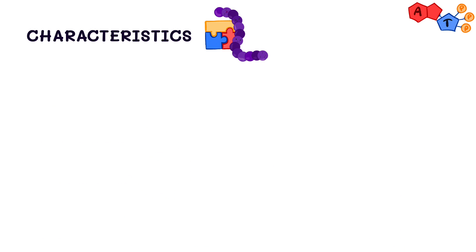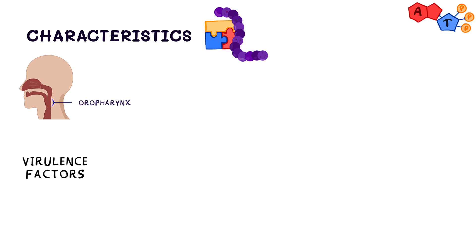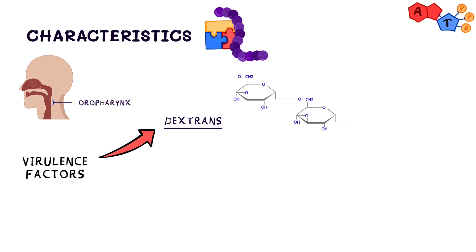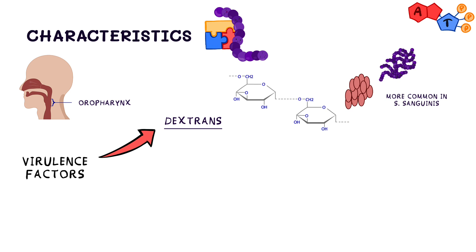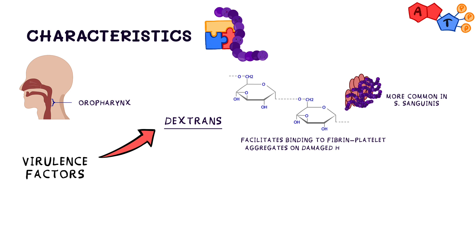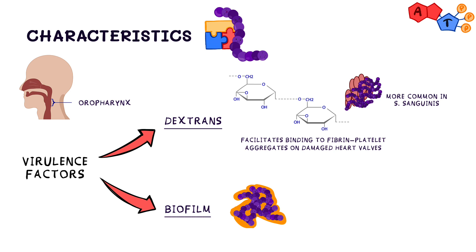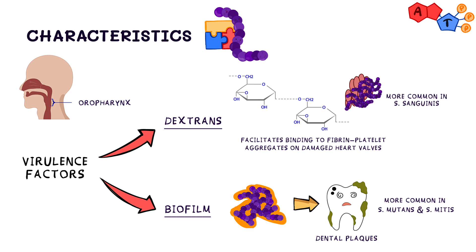The reservoir is in the oropharynx, and Streptococcus viridans has two important virulence factors. Dextran, which is more common in Streptococcus sanguinis, facilitates binding to fibrin-platelet aggregates on the damaged heart valve. It can also form a biofilm, leading to dental plaques — this is more common in Streptococcus mutans and mitis.